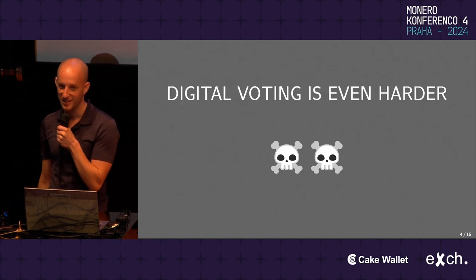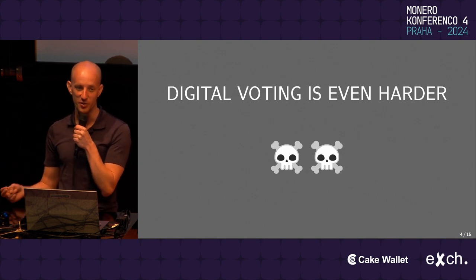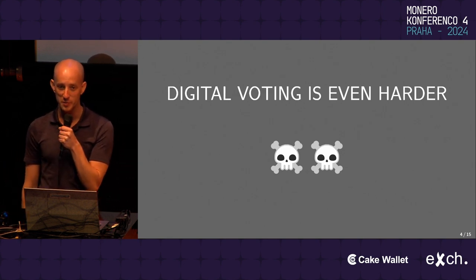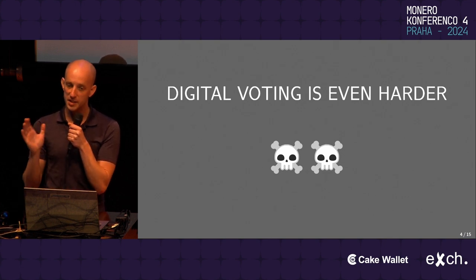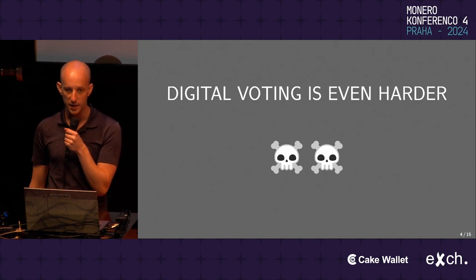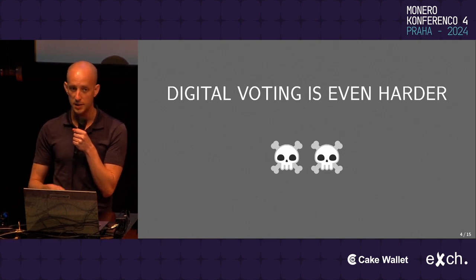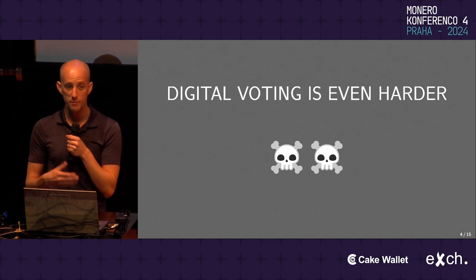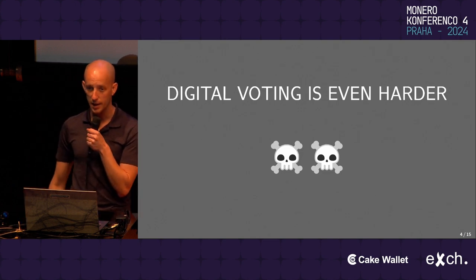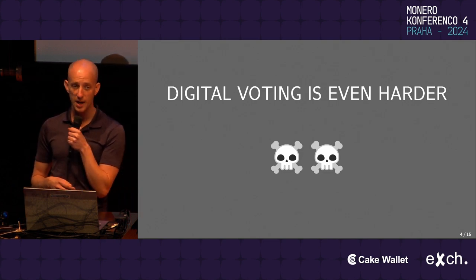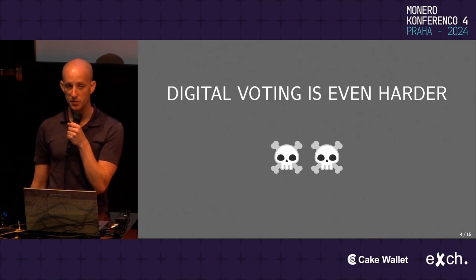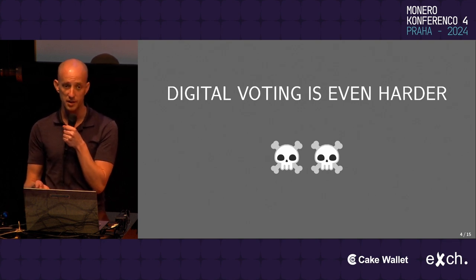Digital voting is even harder — maybe twice as hard, so it gets two skull-and-crossbones icons. Moving to the digital world introduces problems because, while we haven't fully solved physical voting, certain aspects like managing physical identities, secure voting practices, and tallying are fairly well understood. In digital voting, that changes everything. You don't necessarily have a single well-understood digital identity, and you face questions about conducting secret ballots, tallying votes, and verifying everything was done correctly.